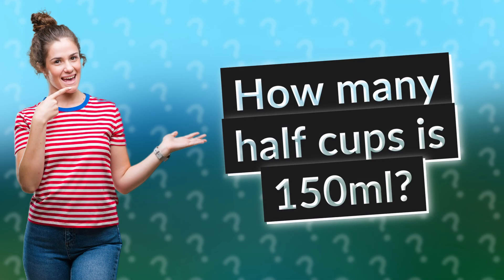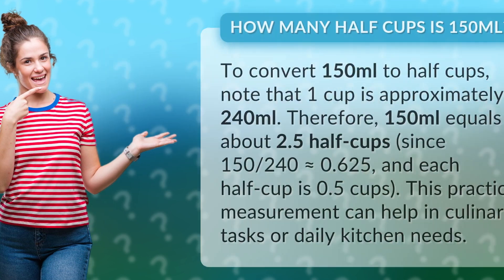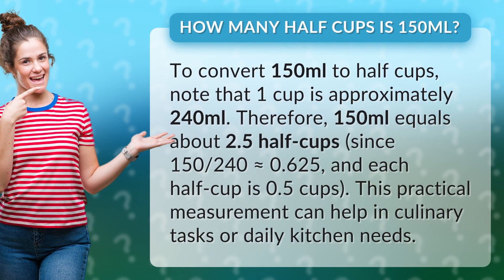How many half cups is 150 milliliters? To convert 150 milliliters to half cups, note that one cup is approximately 240 milliliters. Therefore, 150 milliliters equals about 2.5 half cups, since 150/240 approximately equals 0.625, and each half cup is 0.5 cups.